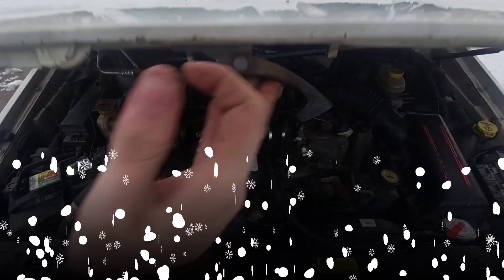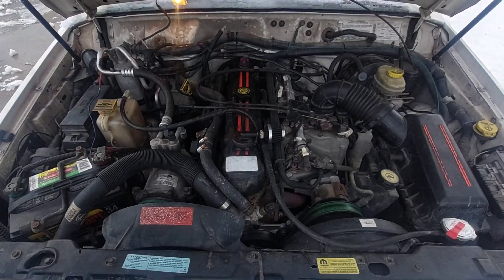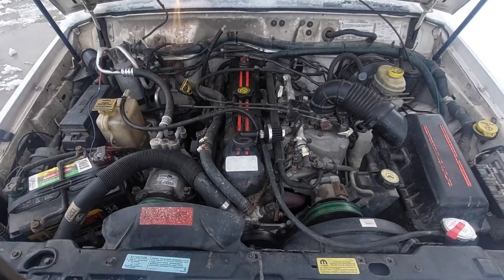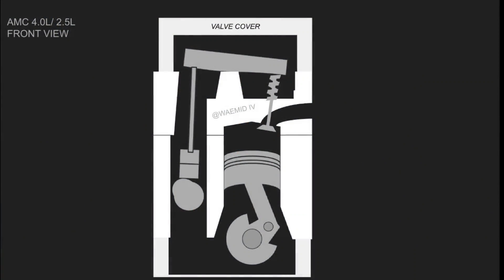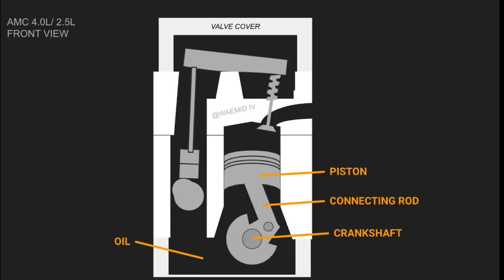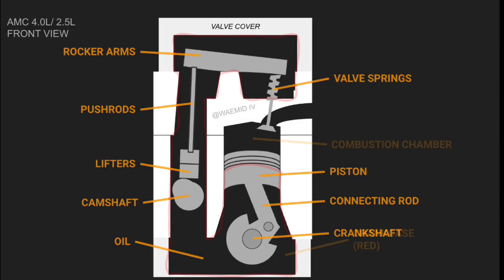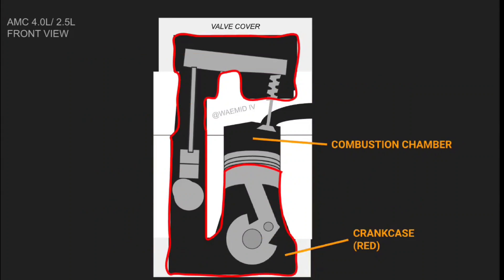The crankcase of an engine refers to the area inside the block where the oil is — beneath the pistons are the connecting rods and crankshaft. But in that same area of space are the oil galleys, camshaft, lifters, push rods, rocker arms, and valve springs, being separated from the combustion chamber by only the piston rings.